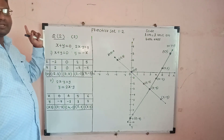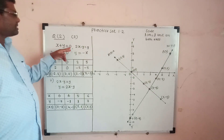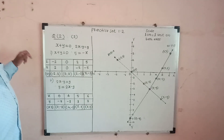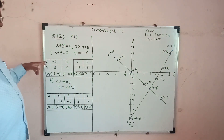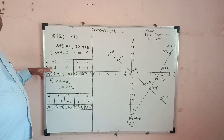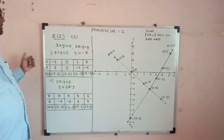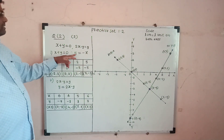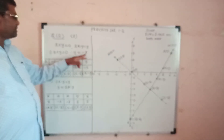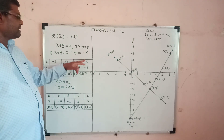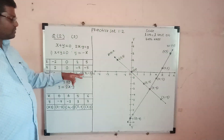Now, example number 3. The two simultaneous equations are x plus y equals 0 and 2x minus y equals 9. Consider the first equation x plus y equals 0; from this, y equals minus x. Let the values of x be minus 2, 0, 2, and 5. Then y equals 2, 0, minus 2, and minus 5 respectively. Ordered pairs: (−2, 2), (0, 0), (2, −2), (5, −5).